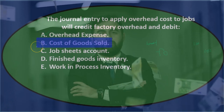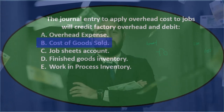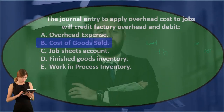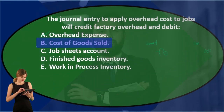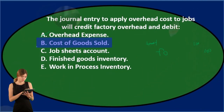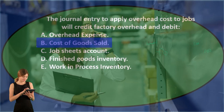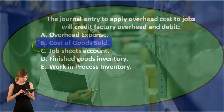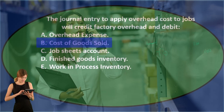B says cost of goods sold — that's going to be the end product. We are going to expense it to cost of goods sold, but not yet. It's going to go into inventory first, and then when we sell the inventory it's going to be expensed as cost of goods sold. So it's not B.